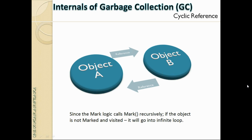Cyclic reference — as seen in the first slide — involves two objects referring to each other. In this case, object A refers to object B and object B refers back to object A. When the mark algorithm traverses starting from root A, it reaches B, then sees a reference back to A, then back to B again — an infinite cycle. This makes the traversal recursive and potentially infinite.